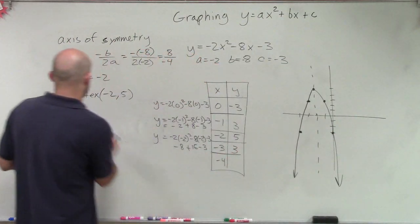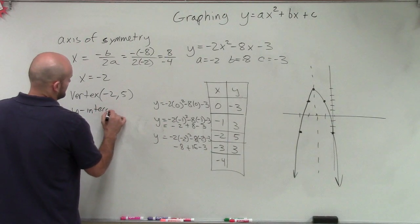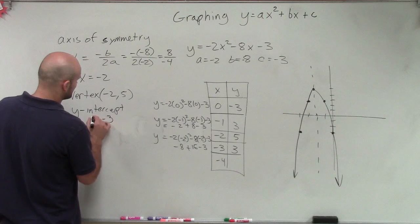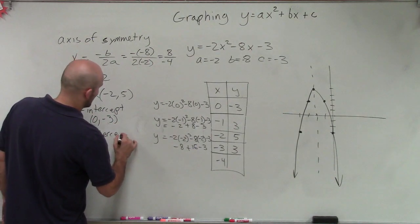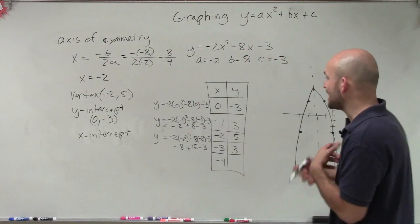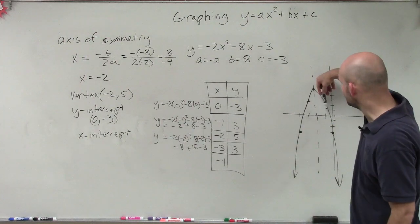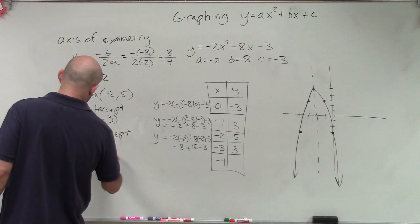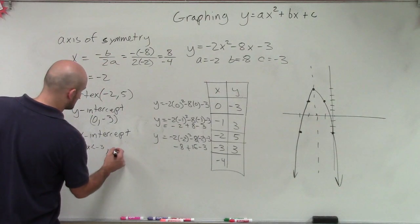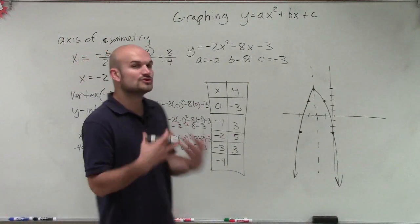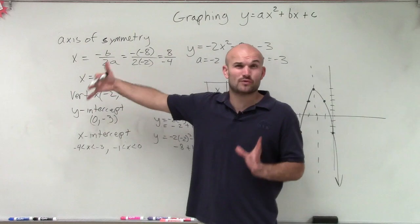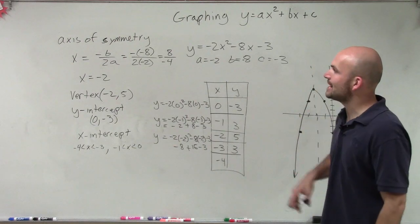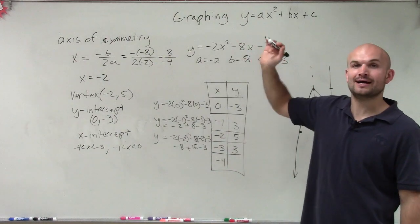Let's look at when the graph crosses the y-axis, which we call the y-intercept. The y-intercept is when x equals 0, and at x equals 0 we have negative 3, so it's the point 0 comma negative 3. For the x-intercepts, we'll learn how to find them to an exact value in future videos. For right now, we can estimate: one intercept is between negative 4 and negative 3, and the other is between negative 1 and 0. As long as we can find the axis of symmetry, our vertex, and our y-intercept, we're all set.